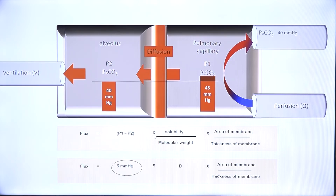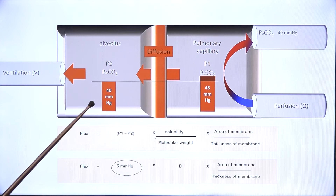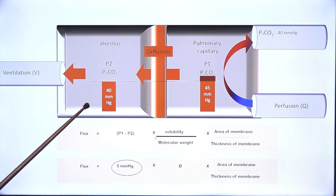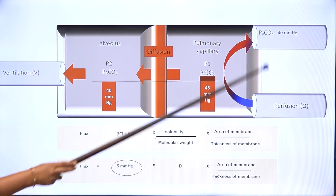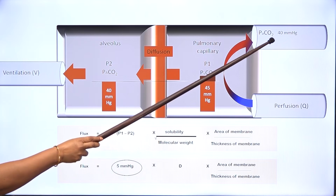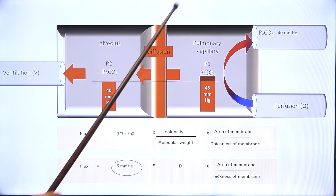Arterial carbon dioxide equals alveolar carbon dioxide in almost all clinical situations you will come across, except extra-pulmonary shunt. That is the only condition where arterial carbon dioxide will be higher than alveolar carbon dioxide. Otherwise, the two are equal, and this is a very important concept in respiratory physiology.